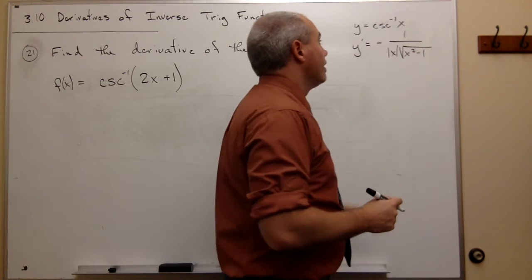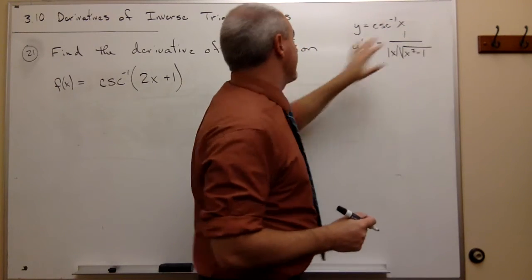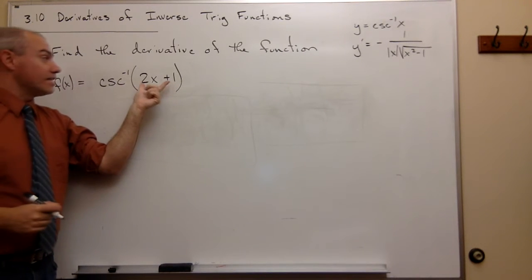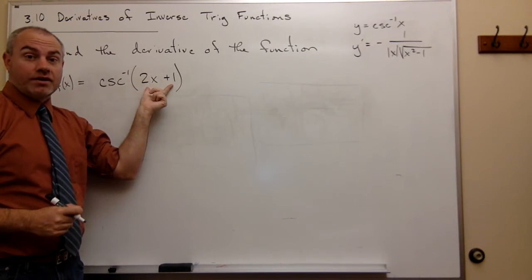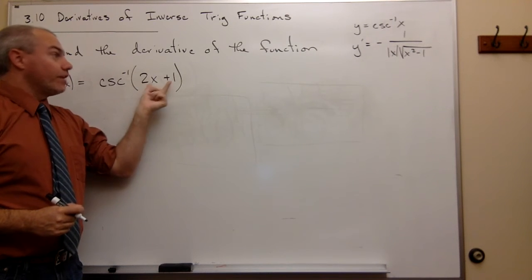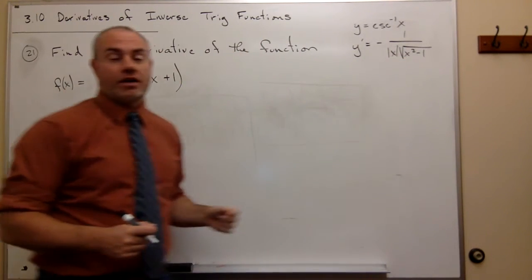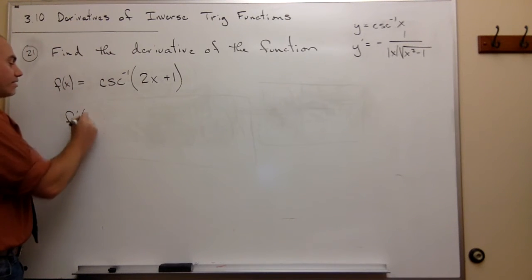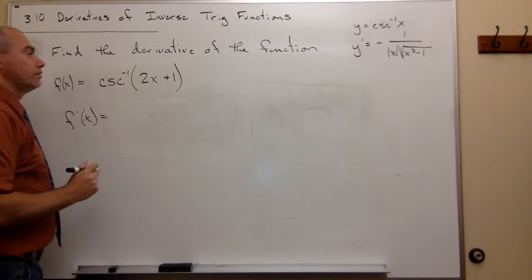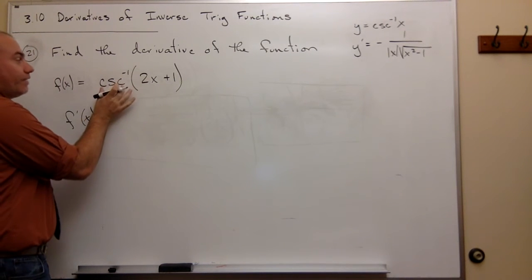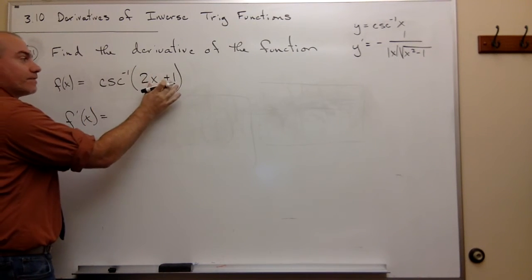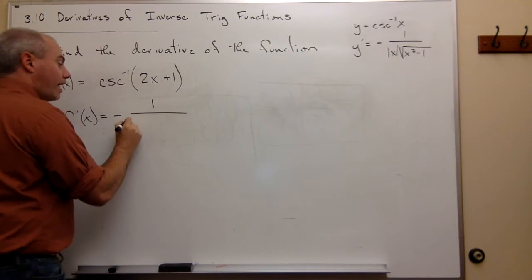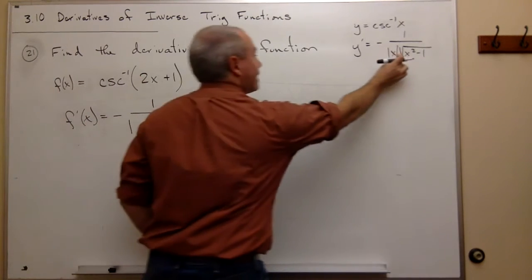So whatever x is — in this case, what's inside the cosecant inverse is 2x plus 1 — that's what we're going to plug in for our x's in the formula. So f prime of x is equal to: the derivative of cosecant inverse of something is negative 1 over the absolute value of that something.